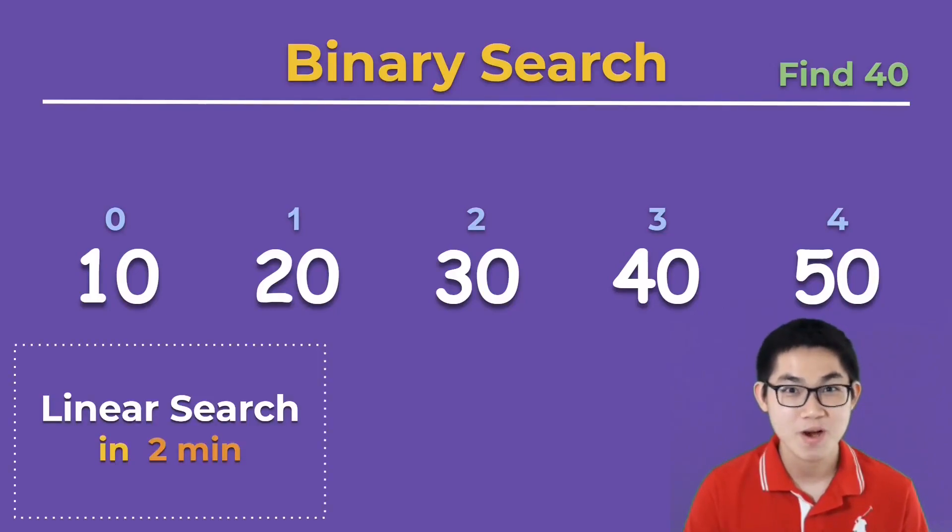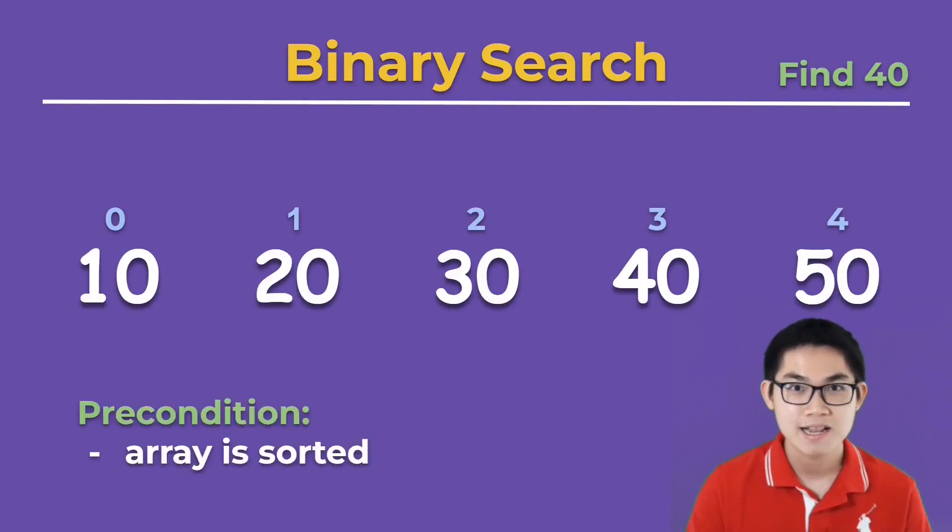In the previous video we already discussed linear search, so if you want to check it out I will include the link down in the description below. Now the precondition to binary search is that the array must already be sorted from least to greatest, and let's try to find number 40 inside this array.